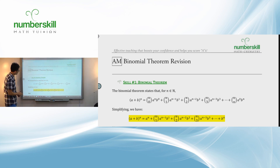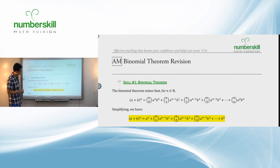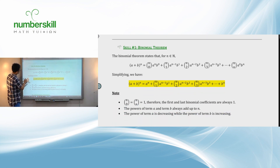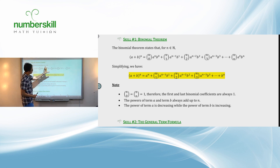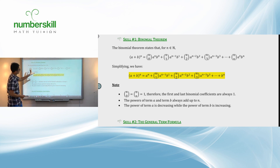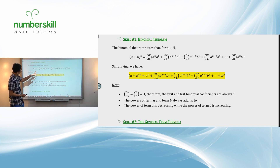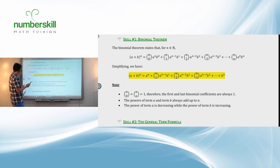Let's talk about binomial theorem. There are three things you need to know in order to do well in this topic. The first thing is the theorem itself — the binomial theorem formula, which you should see in your formula list or textbooks. If you simplify it a little bit, it looks like this.